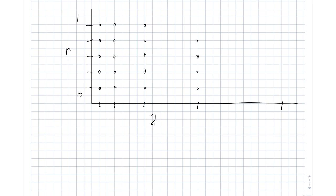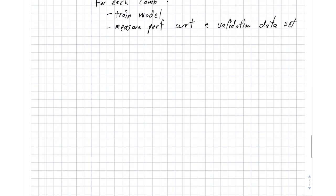As you can see, this starts to get quite big quite quickly. And for each one of these circles, we're going to train a model. So for each combination, we're going to train a model and measure performance with respect to a validation dataset.